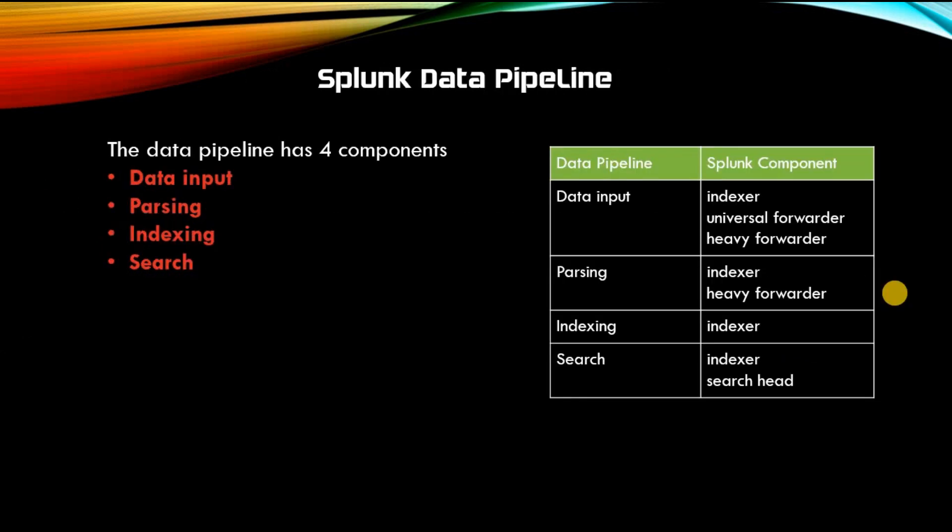Now let's see how data moves through Splunk deployments. Data processing in Splunk corresponds to a data pipeline. The data pipeline has these segments: input, parsing, indexing, and search. The table on the screen shows you in which Splunk component these are majorly done.